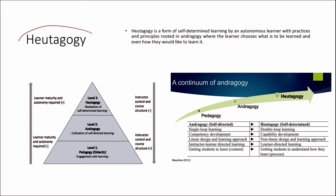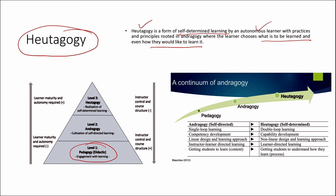At this juncture, I want to introduce a new term called eutagogy. It is a form of self-determined learning by an autonomous learner, with practices and principles rooted in andragogy, where the learner chooses what is to be learned and even how they would like to learn it. If we consider pedagogy as level 1 — engagement with learning — and andragogy as level 2 — cultivation of self-directed learning — then the tip of this pyramid, level 3, is eutagogy — the realization of self-determined learning.